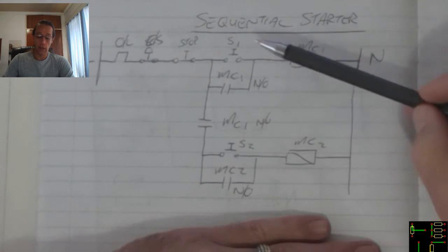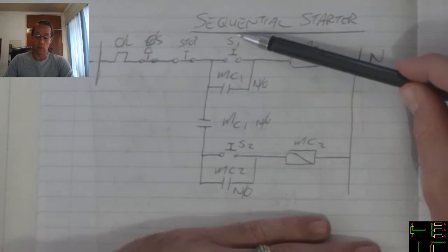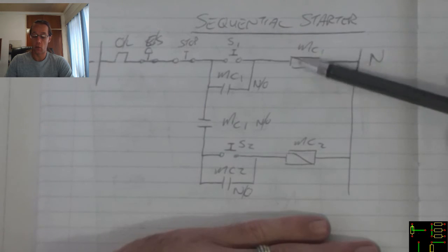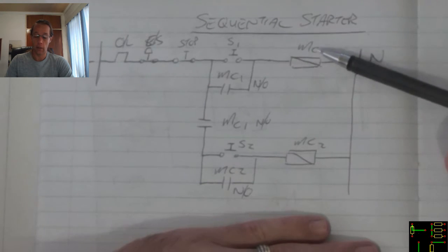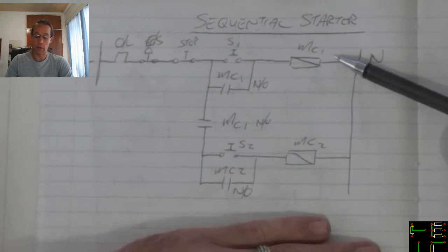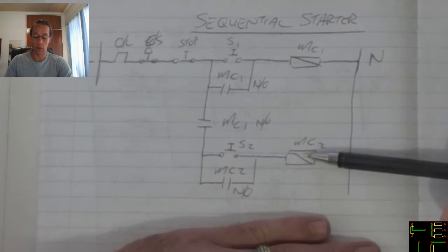Now what we can see here is when we supply power and we push the first start button, this contactor over here will activate. When it activates it closes the latching contact which maintains it with power, but it also closes this contact which supplies power to this branch.